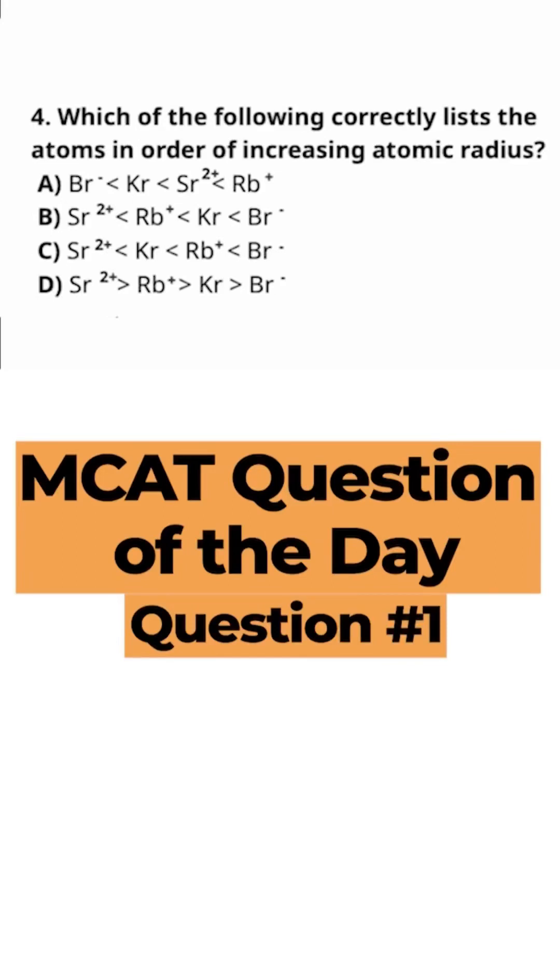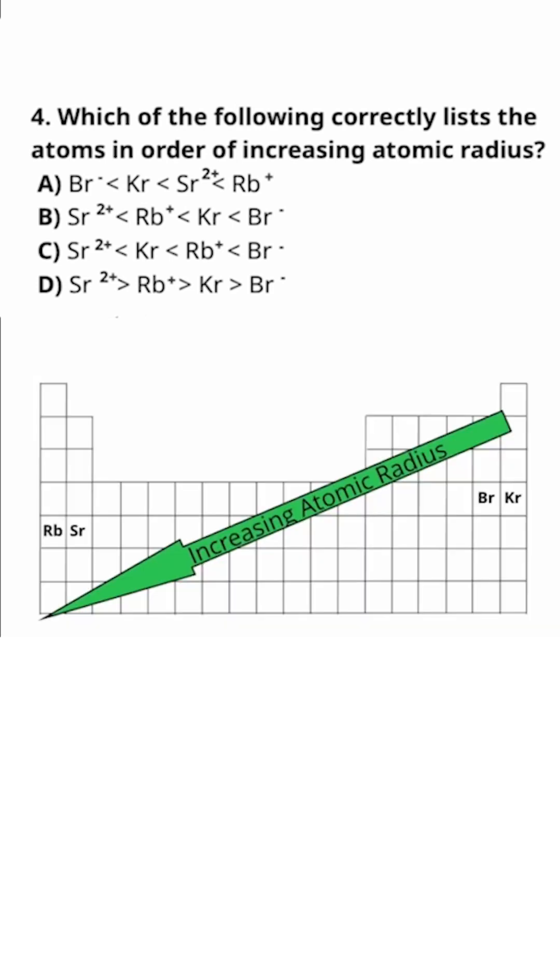Which of the following correctly lists the atoms in order of increasing atomic radius? Atomic radius refers to how large an atom's electron cloud is, which is determined by how far away the valence electrons are from the nucleus of that atom, and it increases as you go down and to the left on the periodic table.